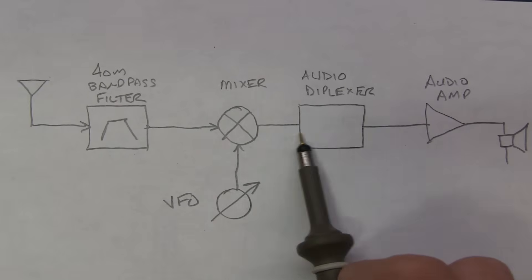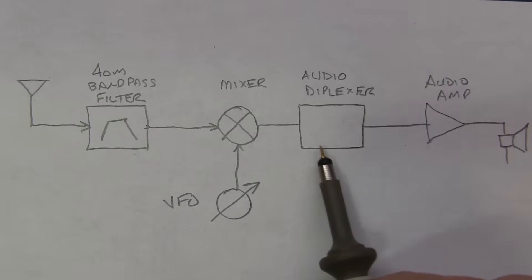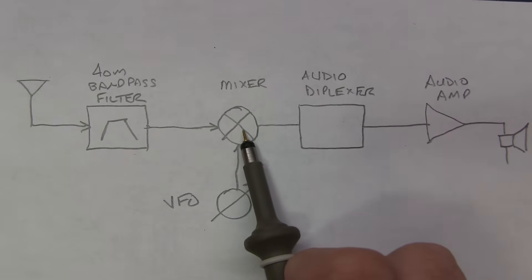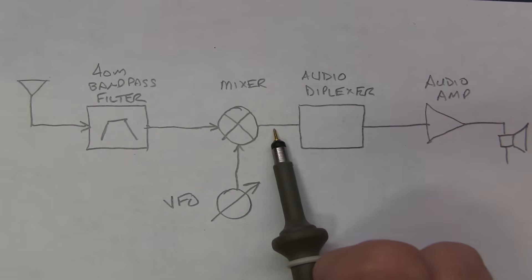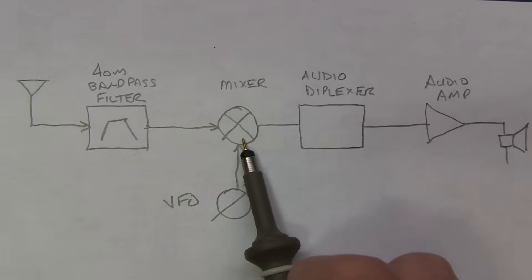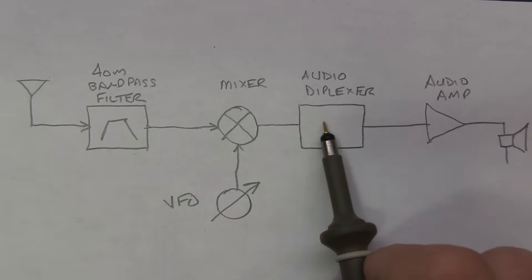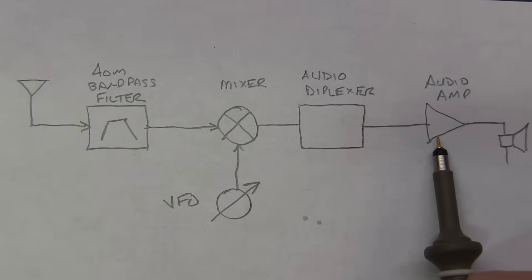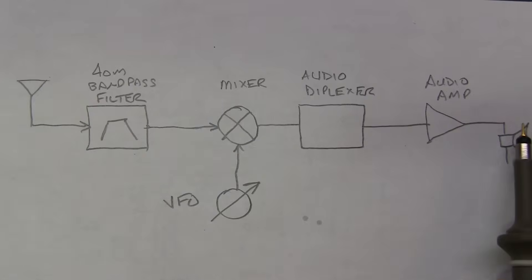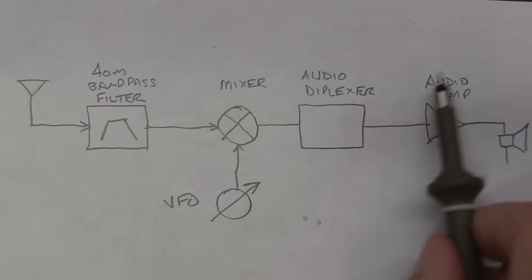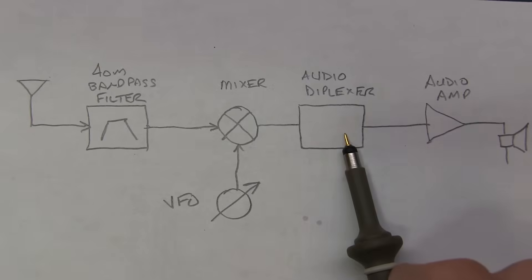The output of that mixer then goes into an audio diplexer, which serves two functions. It serves to terminate any of the RF output that's coming out of the mixer to prevent any issues and non-linearities, and is also a low-pass filter to only allow the audio signals to pass through to the final audio amplifier and then there to drive the loudspeaker. In fact, the only gain in this entire receiver is all done in the audio amp. The mixer is passive, the diplexer is passive, the bandpass filter is passive, and the only other active circuit is the variable frequency oscillator.